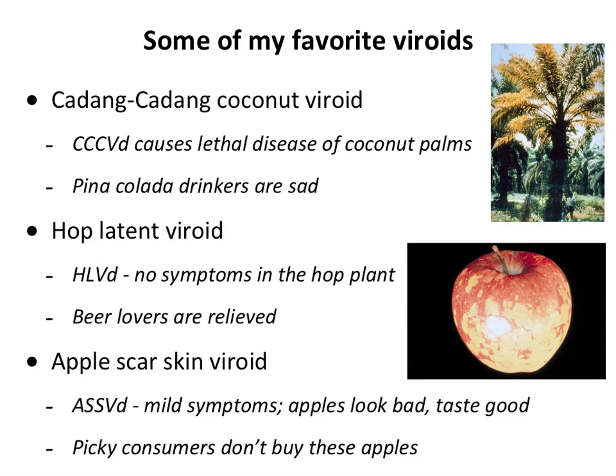Some of my favorite viroids: the cadang-cadang coconut viroid causes a disease of coconut palms — you can see the leaves turning yellow, and you can't sell the coconuts from infected plants. There's the hop latent viroid, which doesn't cause any symptoms in the hop plant, so you can still use it to make beer. And then there's the apple scar skin viroid — you may have seen apples like this in the supermarket. They're perfectly healthy to eat and taste fine, but many people don't want to buy an apple that looks like that.